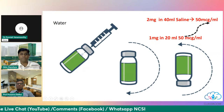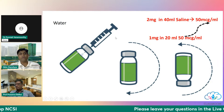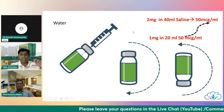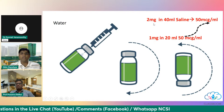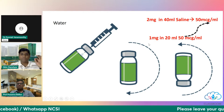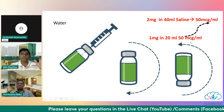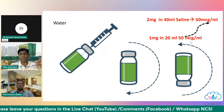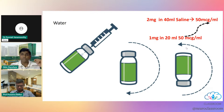Our standard practice — and everyone should pay attention to this — is: the 2 mg vial is diluted into 40 ml saline to give a fixed concentration of 50 mcg/ml. Similarly, the 1 mg vial is reconstituted into 20 ml saline, also giving 50 mcg/ml. This is the standard concentration we use at our institute to avoid confusion and drug errors.